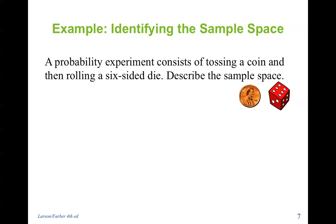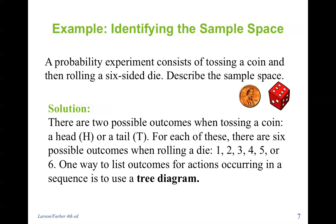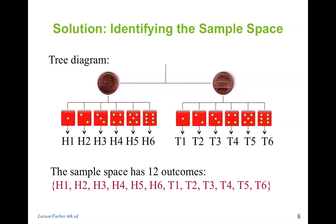A probability experiment consists of tossing a coin and then rolling a six-sided die. Describe the sample space. What are our possible outcomes? First, there are two outcomes possible with tossing the coin, head or tail, and then for the die there are six possible outcomes. We're going to make a tree diagram to show all the outcomes for the actions occurring. First you start with our pennies, so we either have heads or tails, and then with each of those we have six possible choices. So there are actually twelve outcomes because there's two of these, and for each of those there's six, so six plus six will give us twelve possible outcomes.